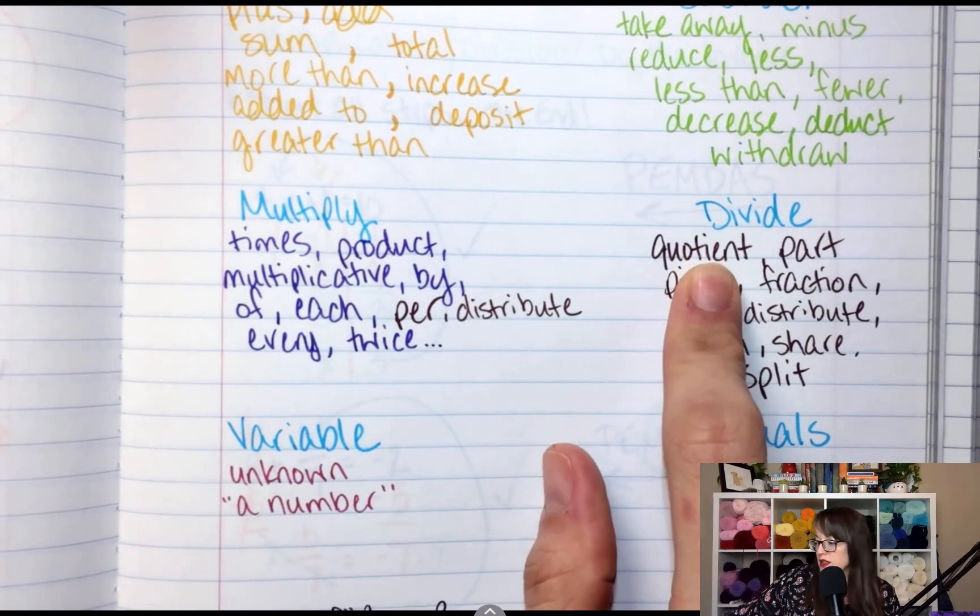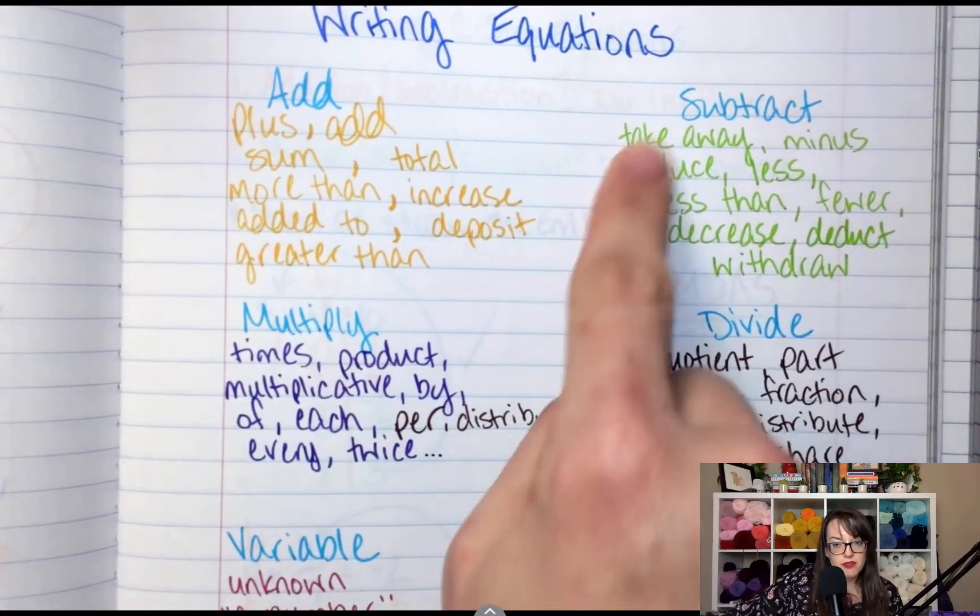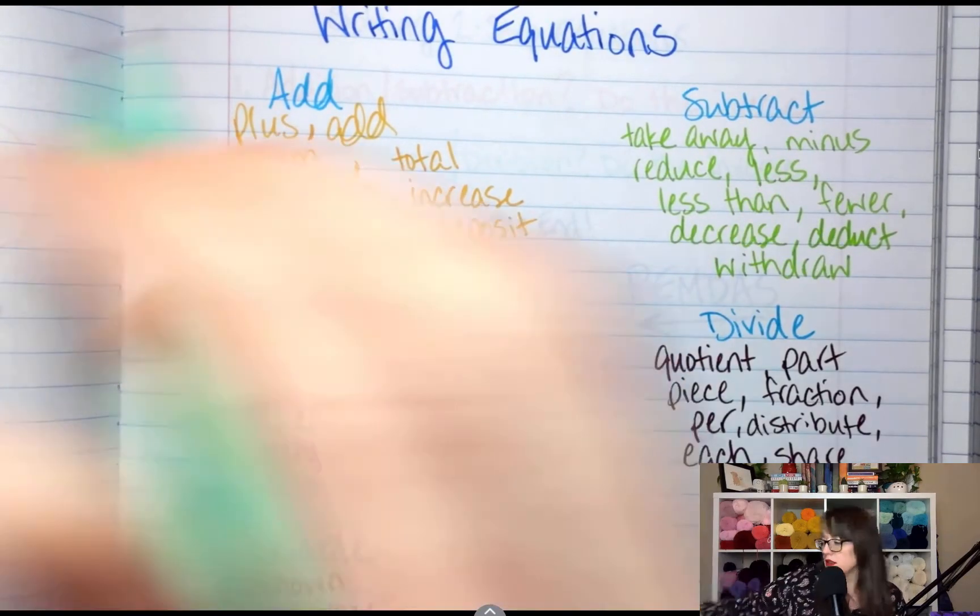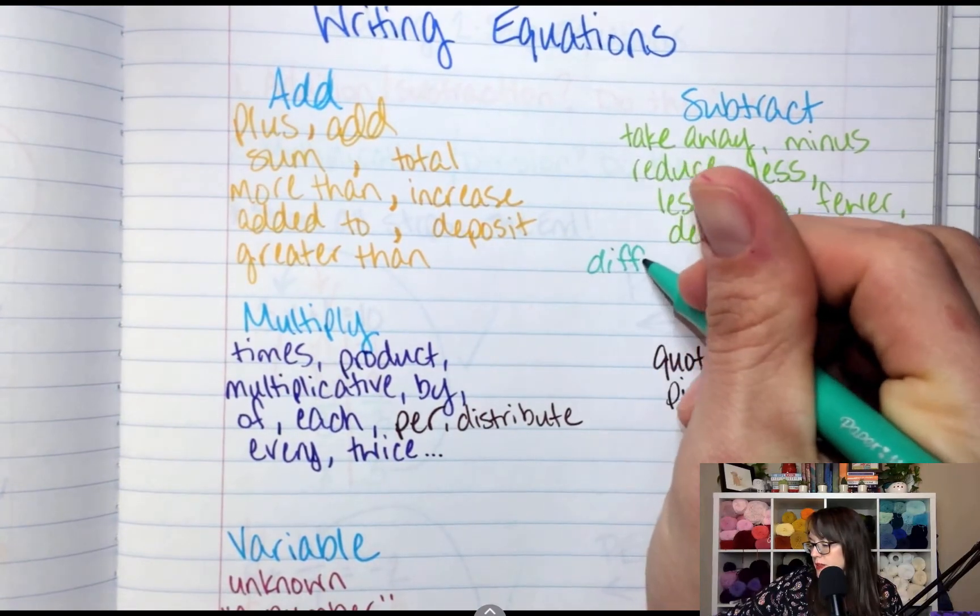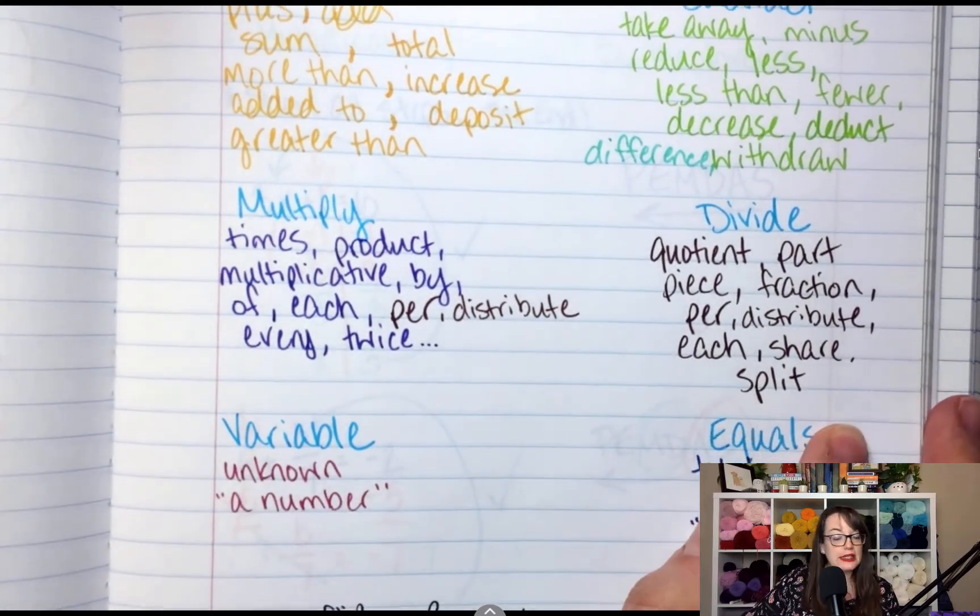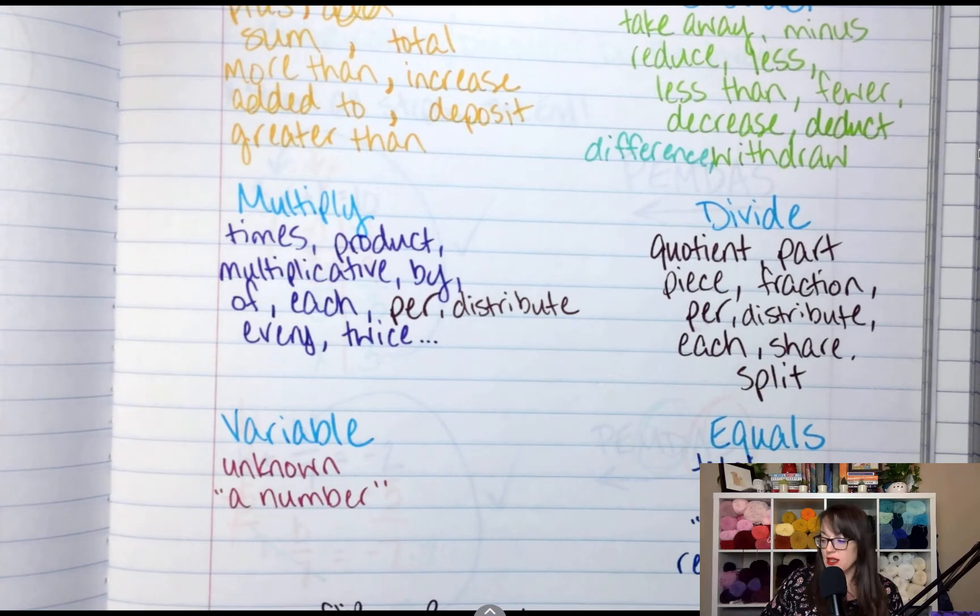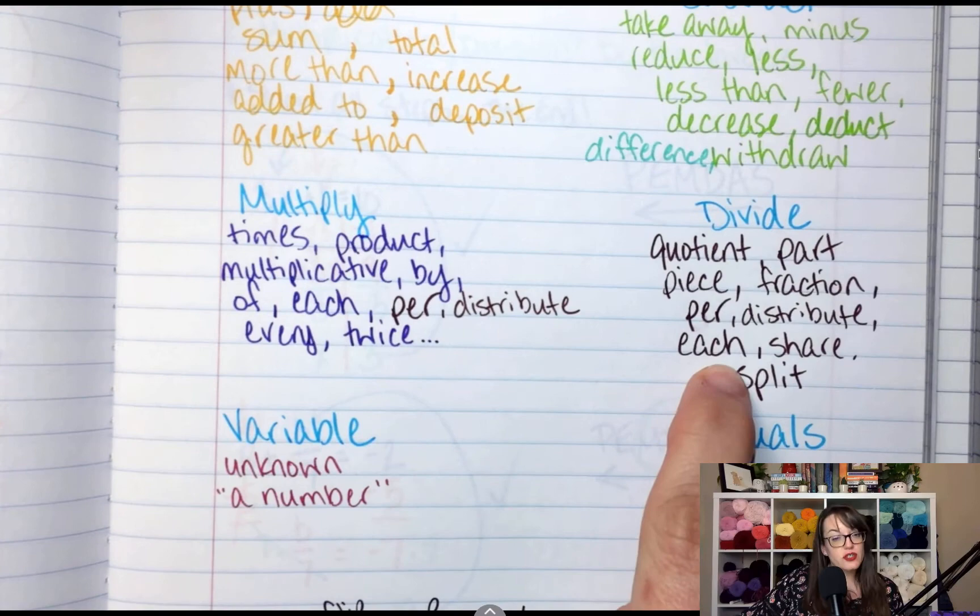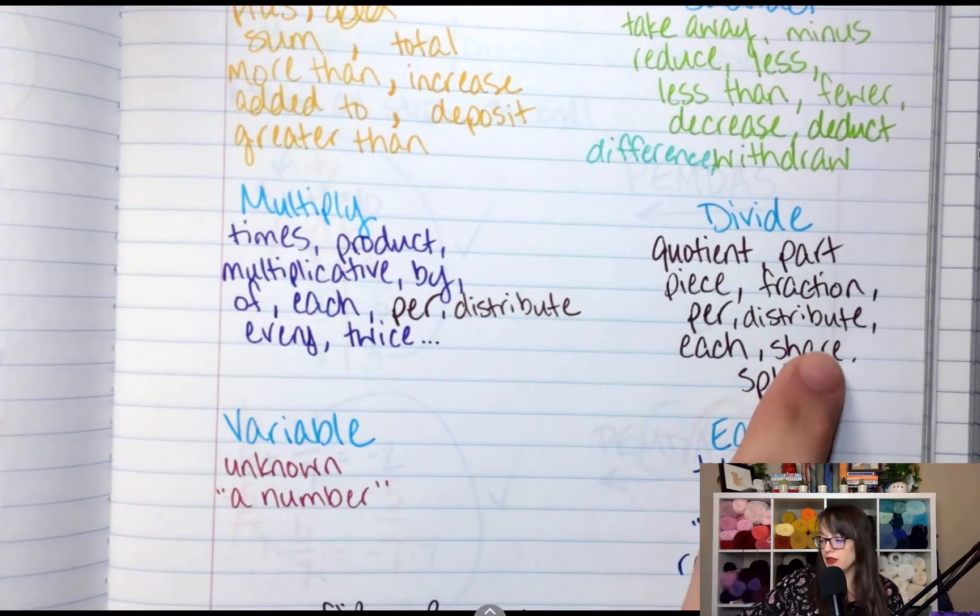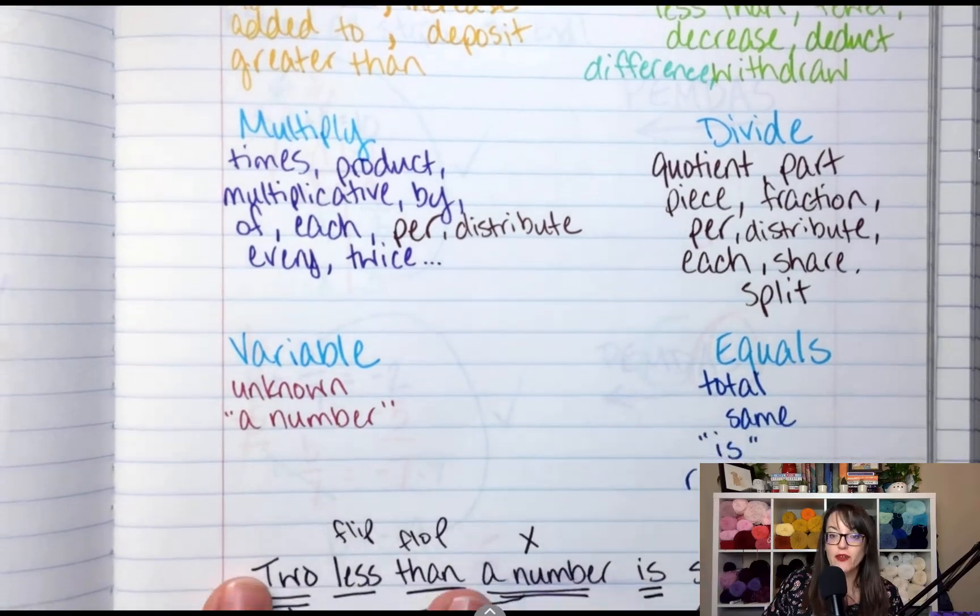Divide, we've got quotient. I'm noticing we don't have difference. Subtract should have difference because we have sum, product, quotient. I need to add difference. All students from years past, we forgot difference. All right. Each, share, split. That's a good one. If you're splitting the check or you're splitting the cost of something, that's a divide. Each sometimes, but also each and every are also multiply. So you have to read really carefully. Distribute. If we're distributing stuff. Again, this is a list that we've created over the past several years.